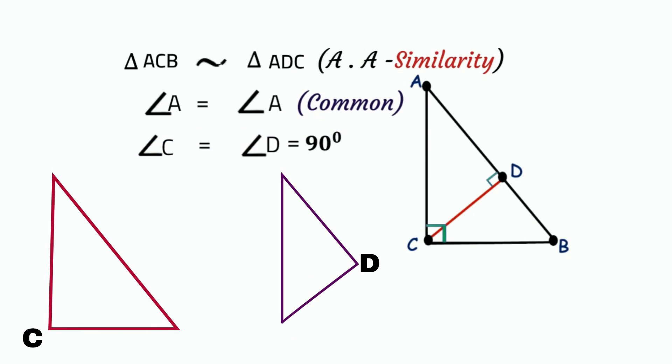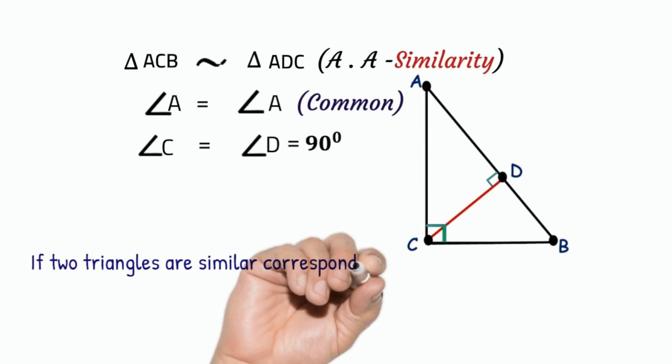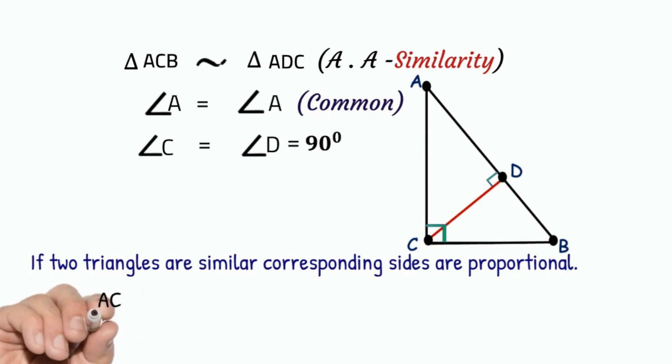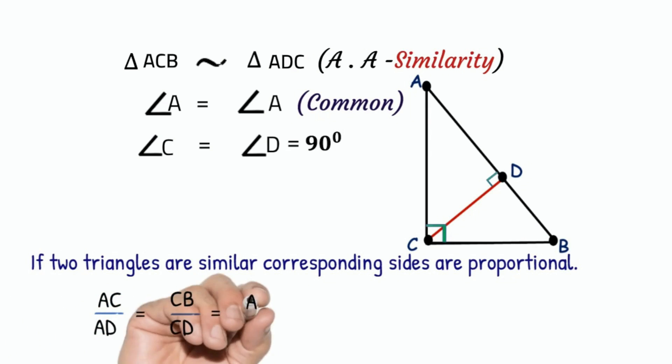We know that if two triangles are similar, then the corresponding sides are proportional. So friends, AC by AD equals CB by CD equals AB by AC.